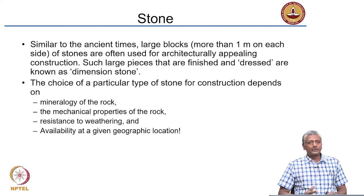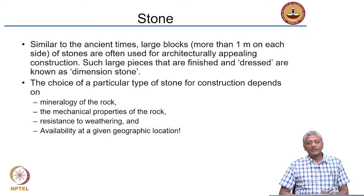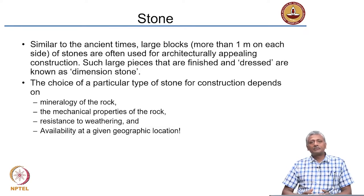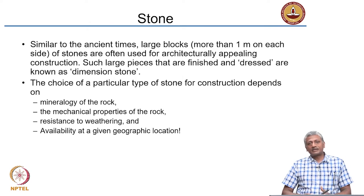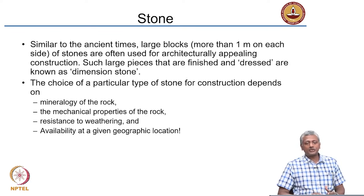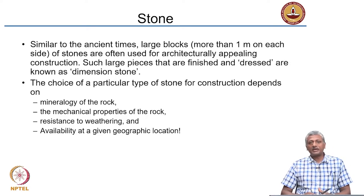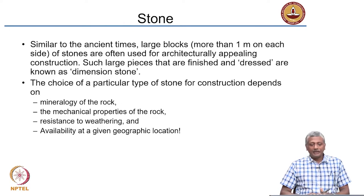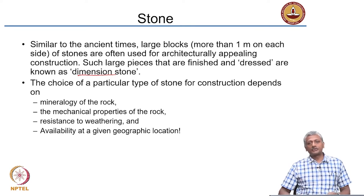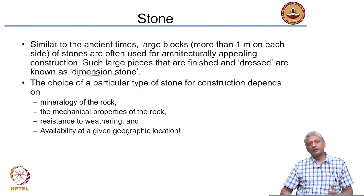When we use stone in very large blocks, typically of the size of 1 meter or more, a lot of large-scale buildings, like the old Parliament House in New Delhi, and structures forming ministries and Rashtrapati Bhavan, are actually made with very large blocks of stone. These blocks of stone are called dimension stone — 1-meter-sized stone blocks used for construction.